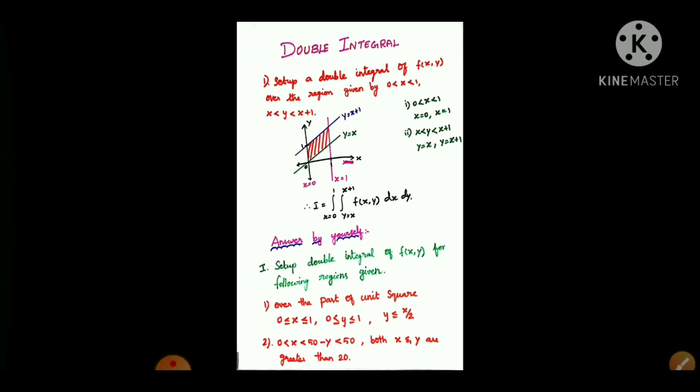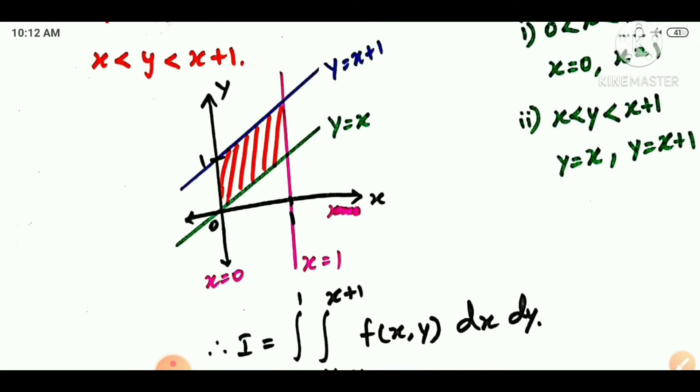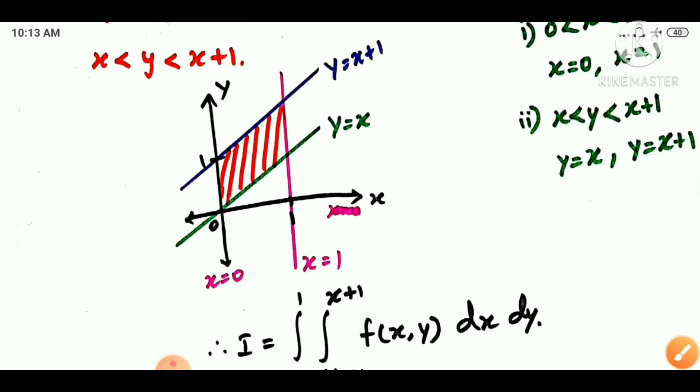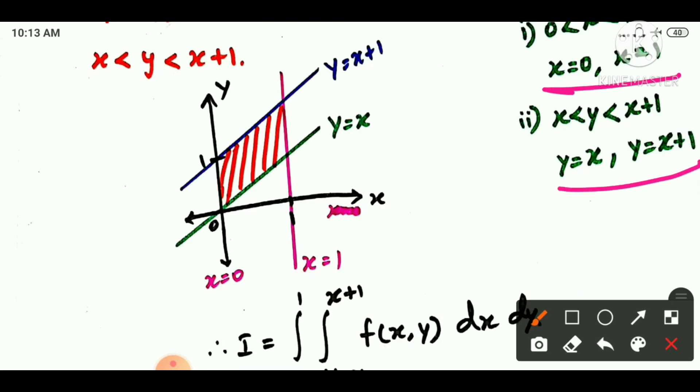So y equals x plus 1 is one boundary, and y equals x is another boundary. We draw the diagonal line y equals x from the origin, and then y equals x plus 1 parallel to it. The region is between these lines.